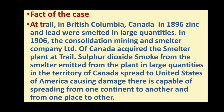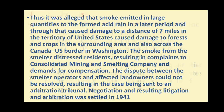The smoke was capable of spreading from one continent to another and from one place to another. It was alleged that smoke emitted in large quantities formed acid rain in the later period, and through that caused damage to a distance of seven miles in the territory of the United States, causing damage to forests and crops in the surrounding area and also across the Canada-US border in Washington.